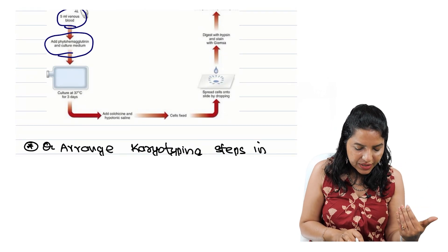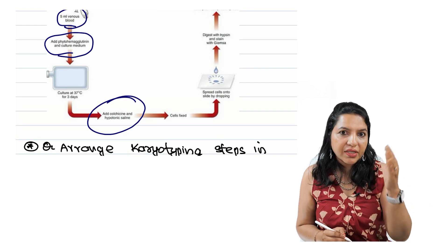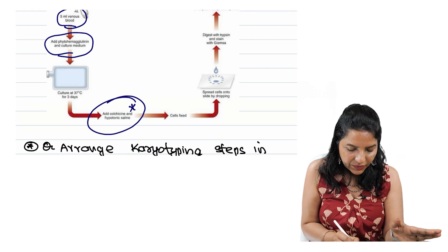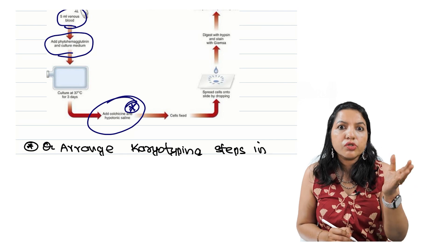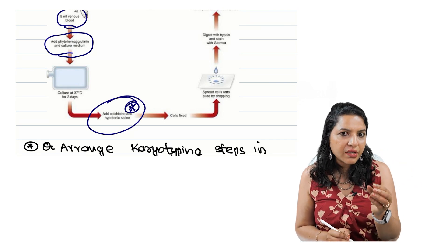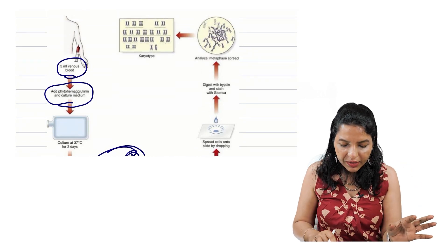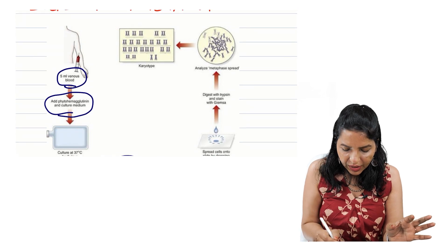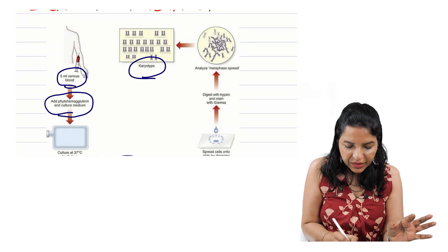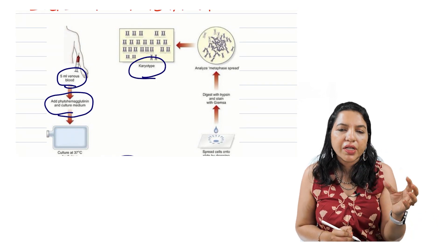Then what you can see is we are arresting the growth at around three days where we are arresting the growth usually at the metaphase. And what is the agent that we use? We use colchicine. Then what we do is we are using Giemsa staining and we are looking it under microscope.